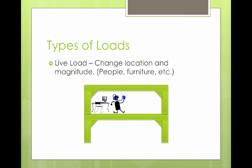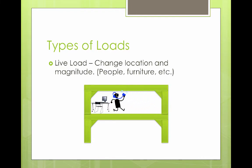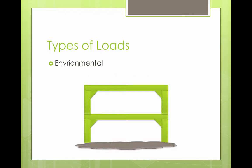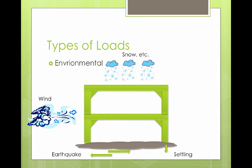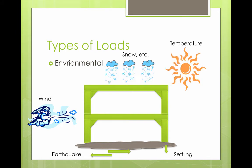A live load is a load that can move location and may change in magnitude or amount. This includes things like people moving around the building. A third type of load are environmental loads — things like wind, earthquake, snow and ice, and settling.